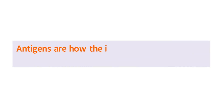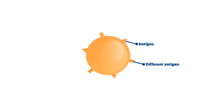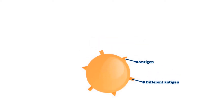Number one: antigens are how the immune system is able to provide specific immunity. The topic of immune specificity was covered in the previous video on the immune system on this channel. Not previously discussed is the crucial role of antigens in the specificity of the immune system.